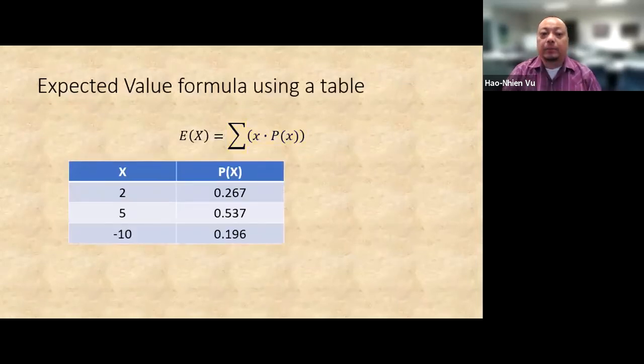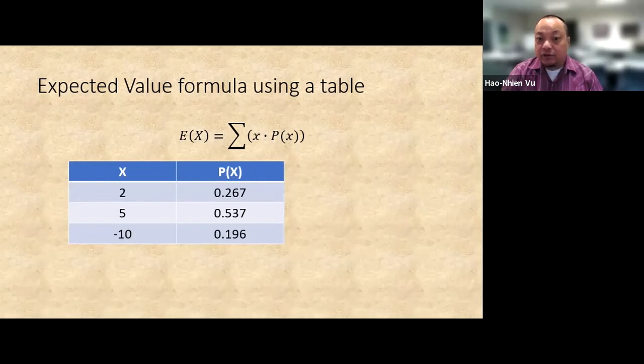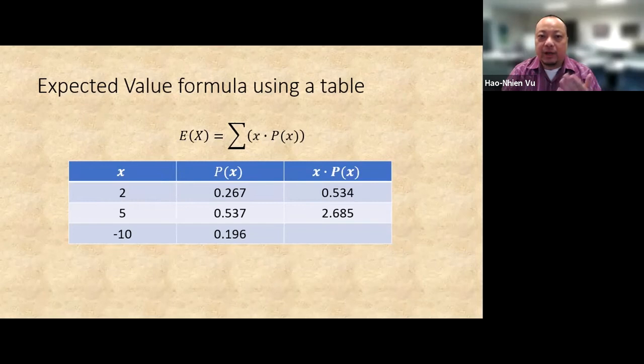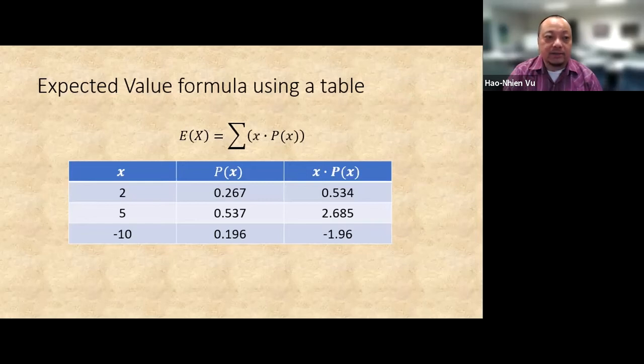Typically we're given a probability distribution in the form of a table like this, and we're asked for the expected value of this probability distribution. Then what we do is create a column of x times p of x. Two times 0.267 is 0.534. Five times 0.537 is 2.685, and we do it again until the end of the table. Negative ten times 0.196 equals negative 1.96.